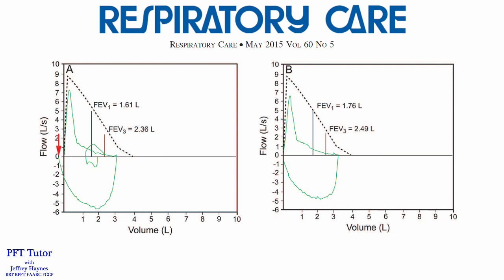In our letter, we included this example of the impact of submaximal inhalation on spirometry results. In panel A on the left, there is submaximal inhalation error. The end of the inspiratory loop exceeds the start of the expiratory flow as identified by the red arrow. In panel B on the right, the error has been corrected.